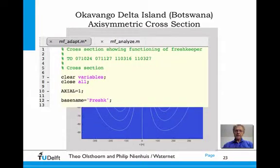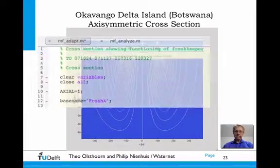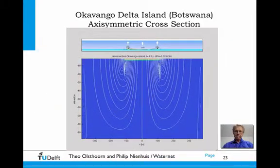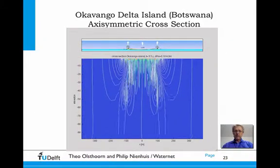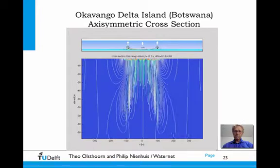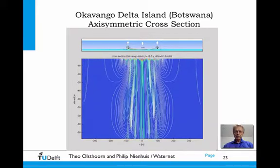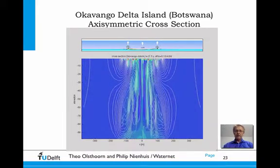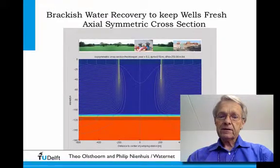To change a flat cross-section into an axially symmetric one, the only thing you have to do is go to MF-ADAPT and add the parameter 'axial = 1', as shown here in line 10. Then the island becomes a circular island and all patterns become circular.